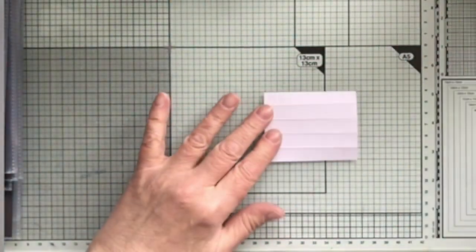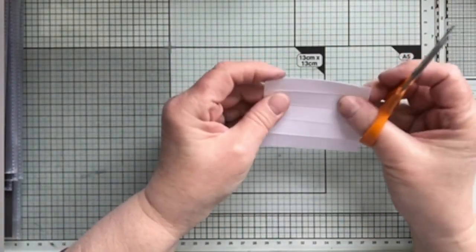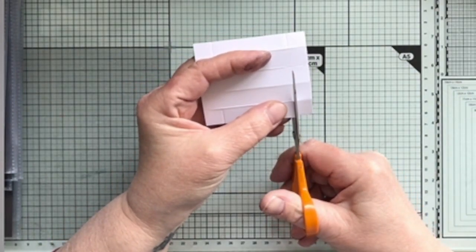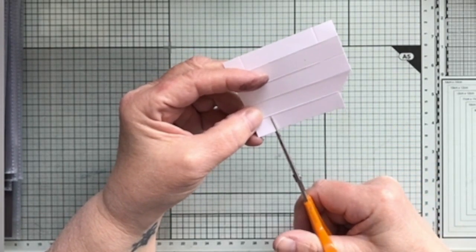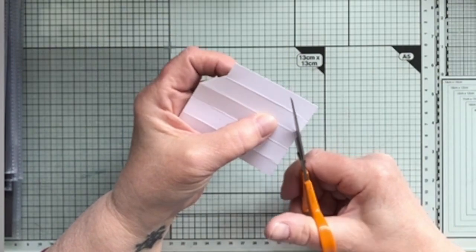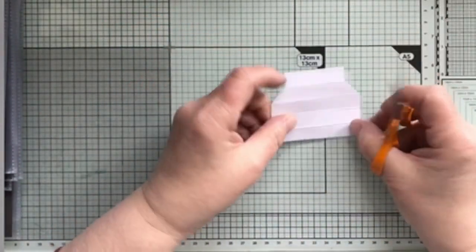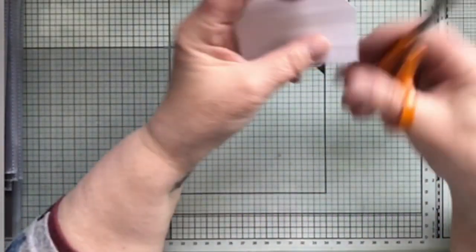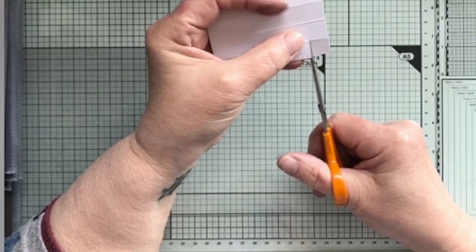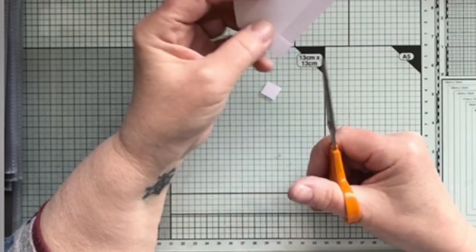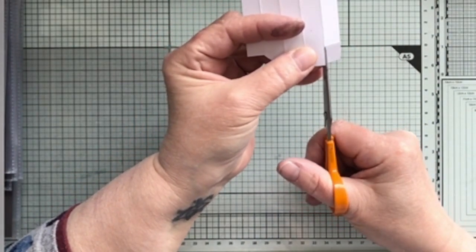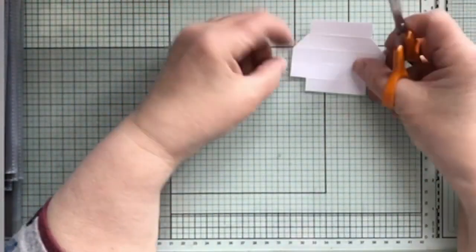You will have two pieces that look like that, and then you will have two pieces of this one. What you need to do is where you have done the score line, cut up to the first score line and angle your scissors. You are going to cut diagonally to the next score line. And then on the other side you are just going to take the squares off completely. And then you are going to cut diagonally so you have got this sort of shape.